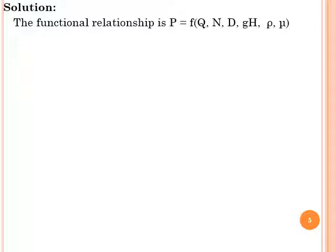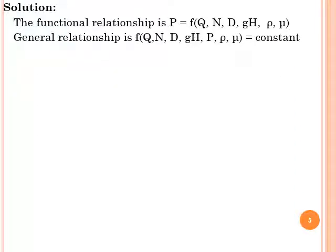The functional relationship is: power output from the turbine is a function of discharge Q, speed N, diameter D, energy GH, density ρ, and dynamic viscosity μ. The general relationship is written as f(Q, N, D, GH, P, ρ, μ) = constant.